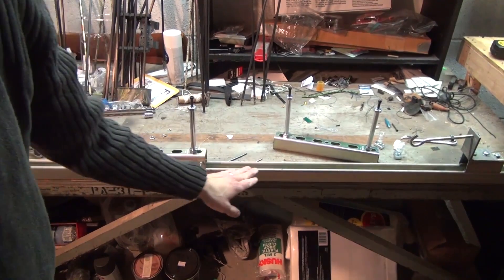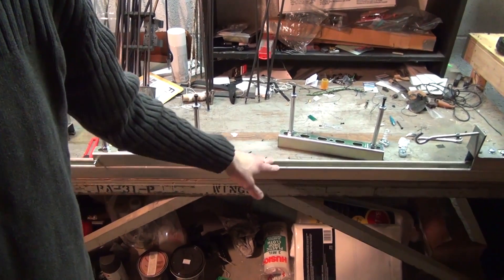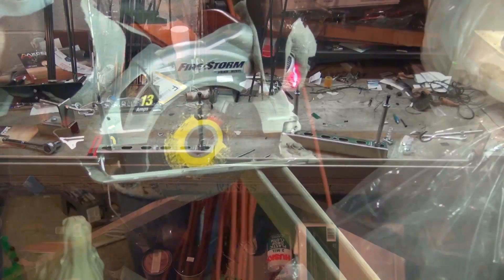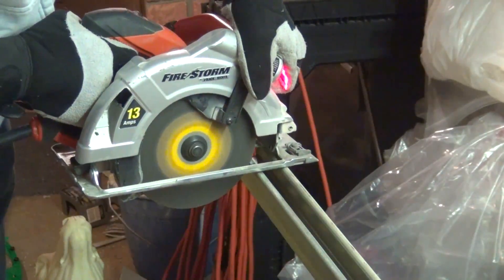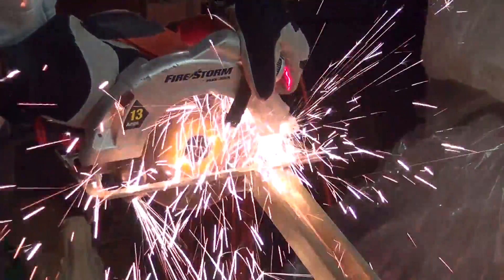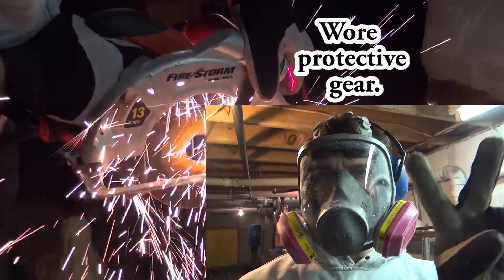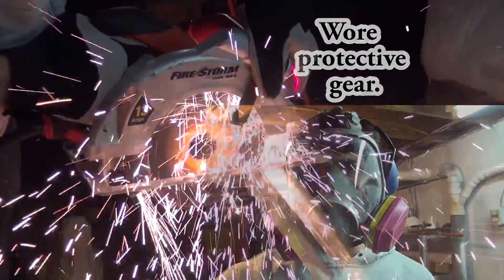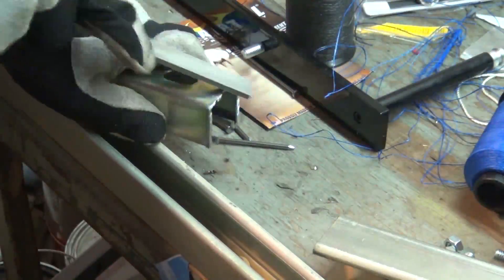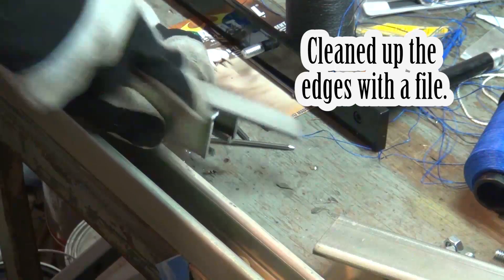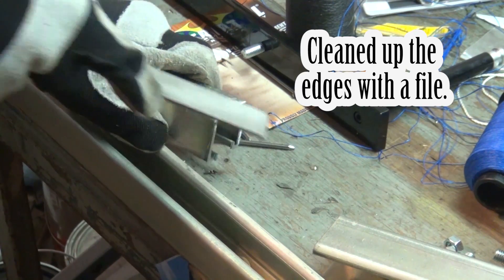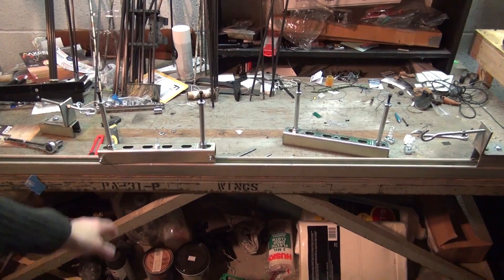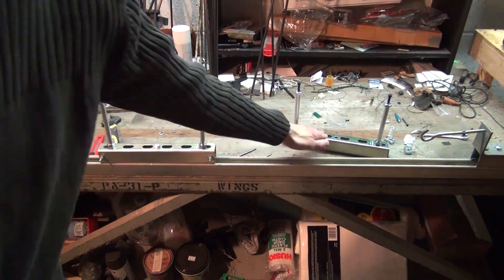First thing I did is I got a 10-foot piece of unistrut, which is this right here, and then I bolted it to the table. Then I cut two one-foot sections of the unistrut off the end to make these pieces.